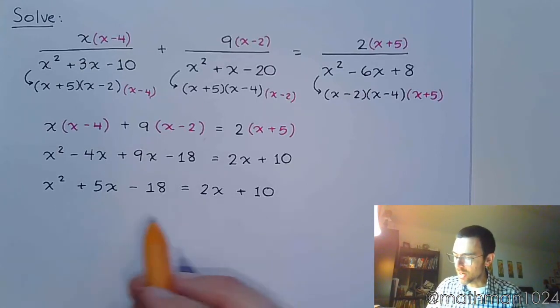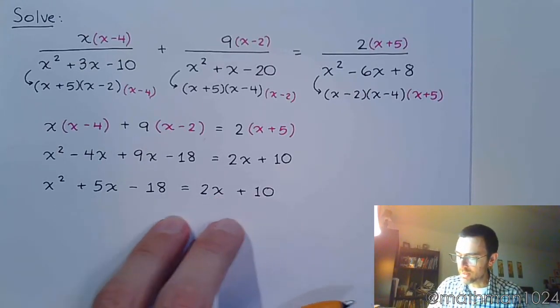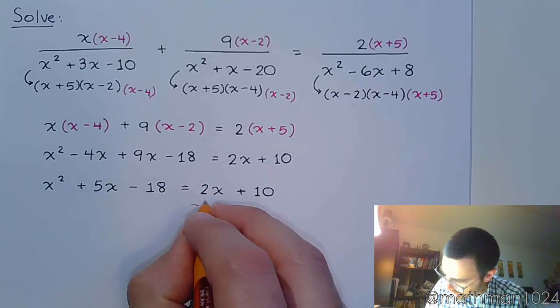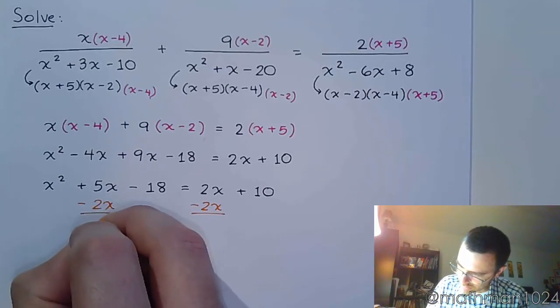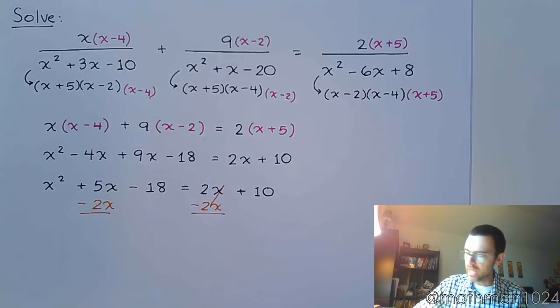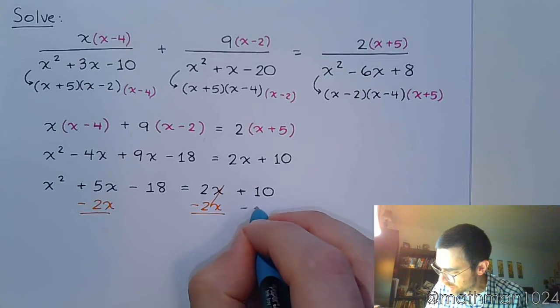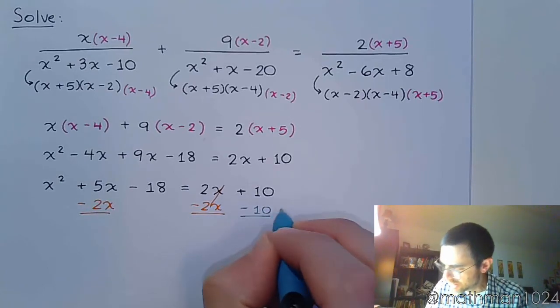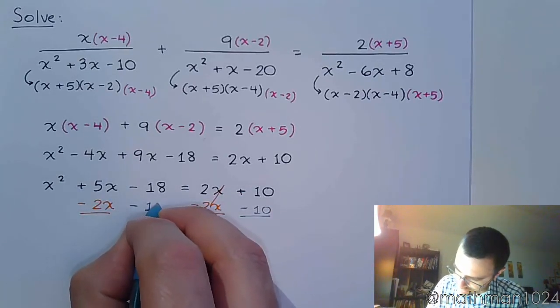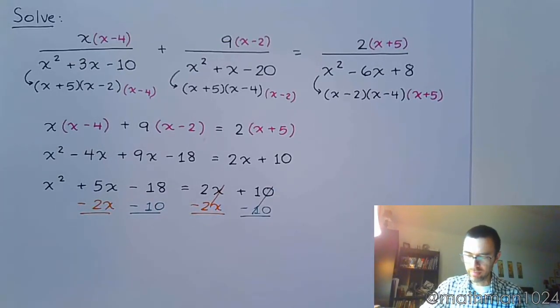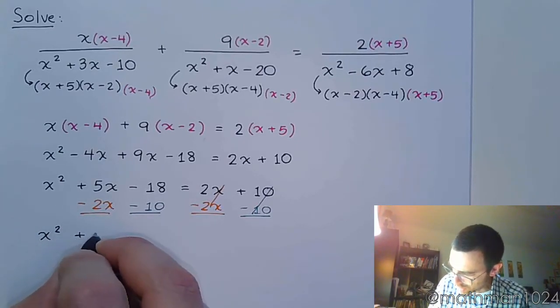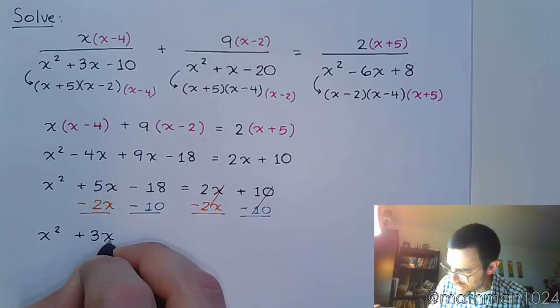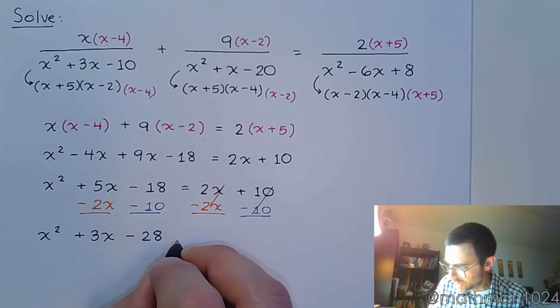So, I've got the x squared, I need to move these two terms from the right to the left. So, let's subtract 2x. And at the same time, we're going to move the 10 to the other side by subtracting 10. So, we have x squared, combine these like terms, that's plus 3x and minus 28.